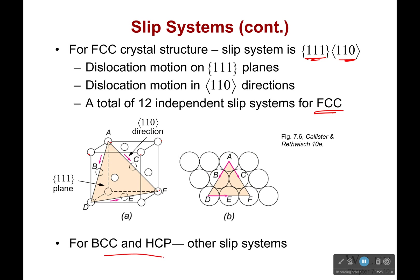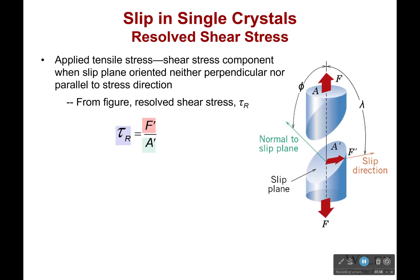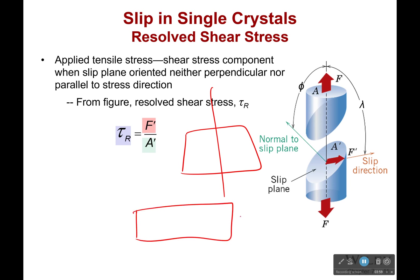For body-centered cubic and hexagonal close-packed, we have different slip systems — you'll have to look at those to see what they are. Now, this slip is caused by shear stress. But where does this shear stress come from? When we think plastic deformation, we usually think of stretching things or compressing things — so isn't that normal stress since the force is normal to the plane? Why are we showing shear stress?